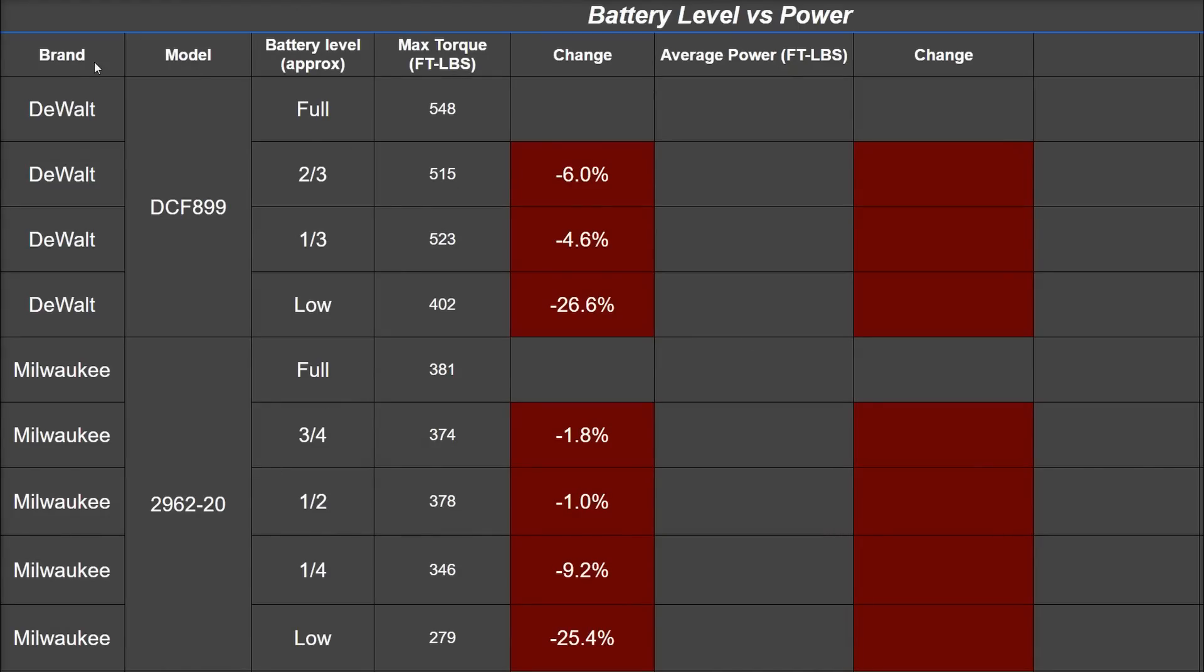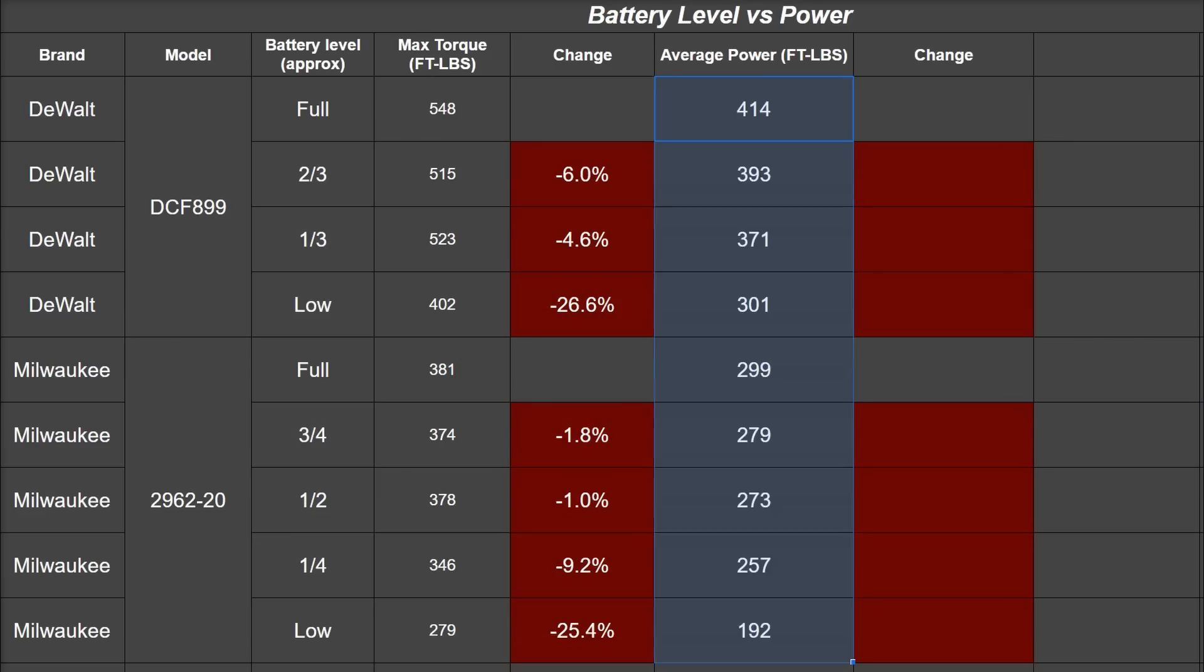We've got brand here, model number they were tested with, battery level which is three levels and low for Dewalt and four levels and low for M18. Here is their deficits if looking strictly at their max torque numbers which we're often guilty of doing on this channel. But for you out there in the wild needing to bust something rusted free or just get the job done quickly,